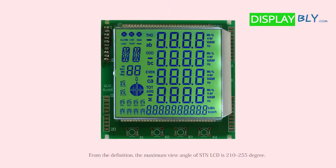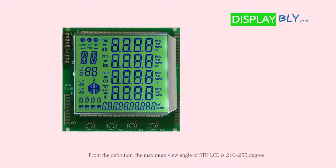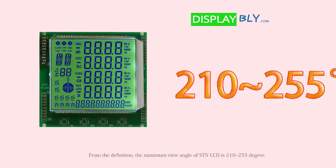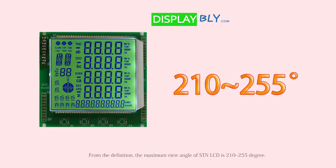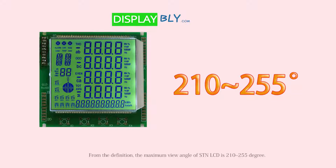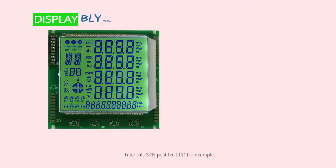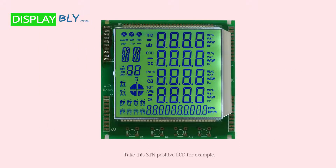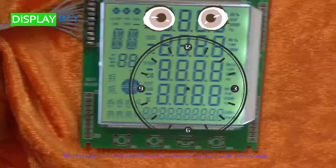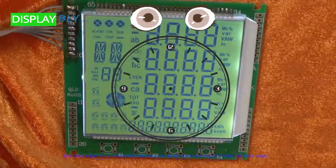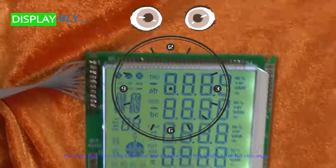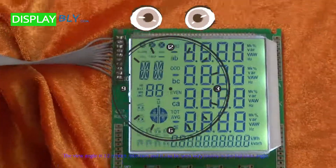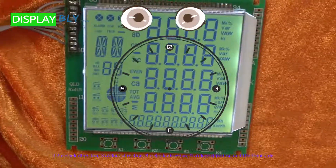From the definition, the maximum view angle of STN LCD is 210 to 255 degrees. Take this STN positive LCD for example. The view angle is the 12 o'clock direction, and it can be seen very clearly in the full view angle.